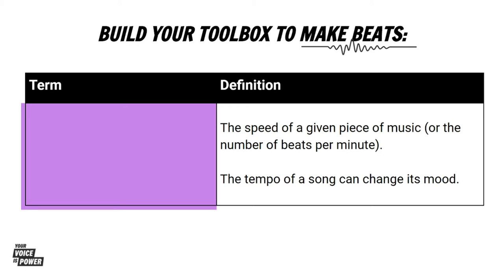Shalise and Mike both know the importance of time in music composition. Mike explains why the tempo is so important to setting the mood of a song. Tempo is the speed of a given piece of music or the number of beats per minute. In your assignment you can write down tempo as the term for this definition: the speed of a given piece of music or the number of beats per minute.